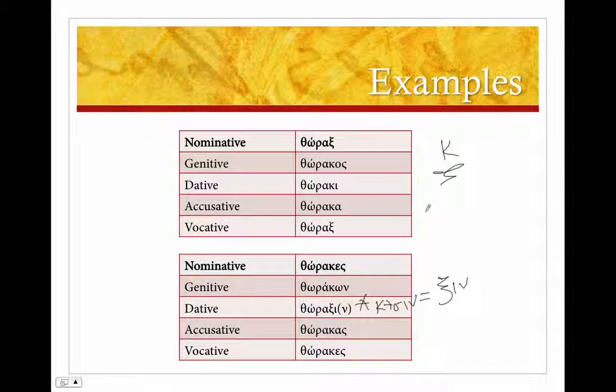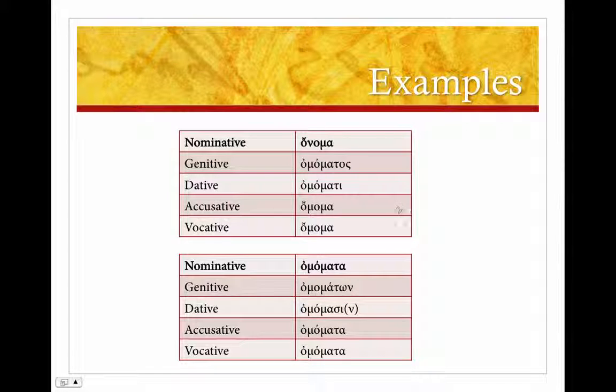And then we'll take a look at neuters. Onoma, onomatos. So these are neuters whose stems end in tau. Onomatos, onomati, onoma, the same as the nominative, onoma. In the plural: onomata, onomaton, onomasin, onomata, onomata. So other than my bad spelling, you'll notice the endings are exactly as you'd expect, following the rules of neuters.